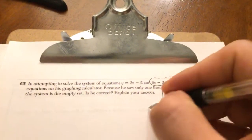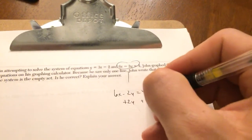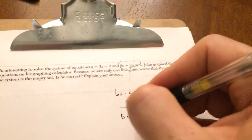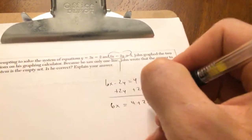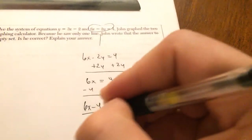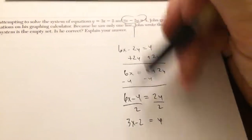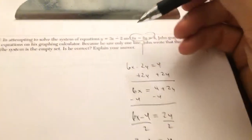Well, if you take this one and you solve for y, I'm going to add 2y, you should have 6x equals 4 plus 2y, subtract 4, you get 6x minus 4 equals 2y, divide everything by 2, you get 3x minus 2. If you notice, this is the exact same line as this.